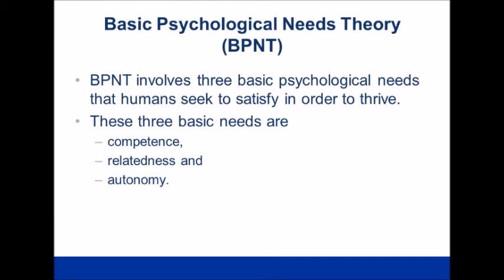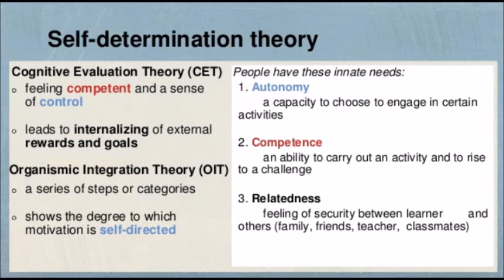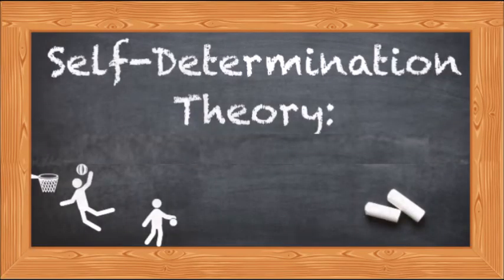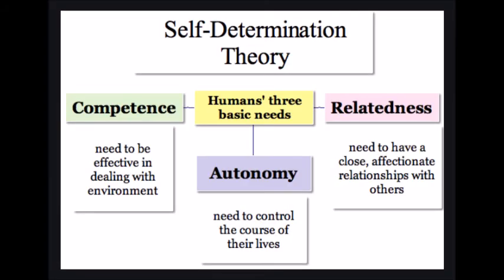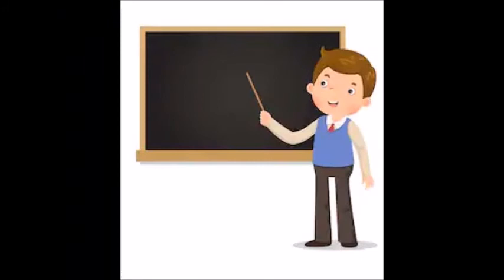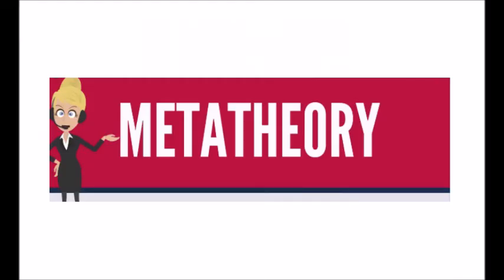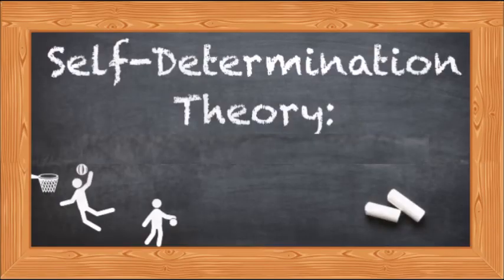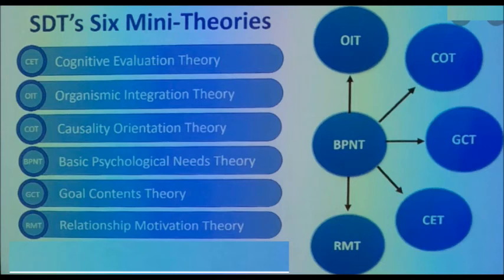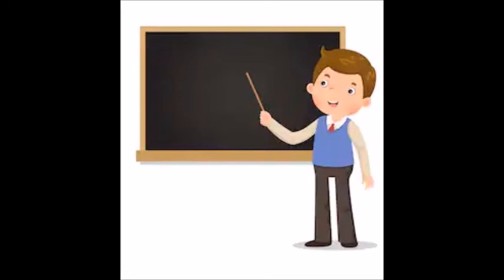You have seen how Deci and Ryan fused these six theories and proposed one theory known as self-determination theory, with three components — autonomy, competence, and relatedness — as human needs that should be fulfilled for better personality development, motivation of employees, and their well-being. Every theory whose subject matter is some other theory or theories is called a metatheory.